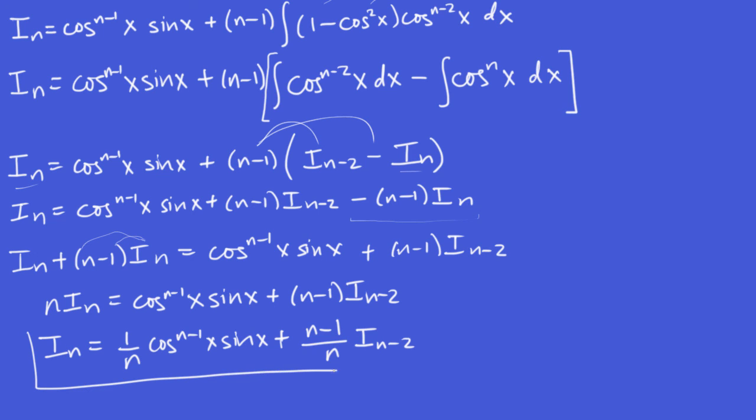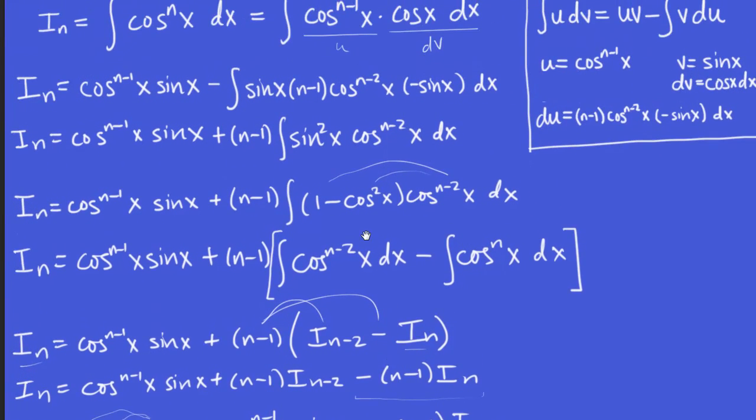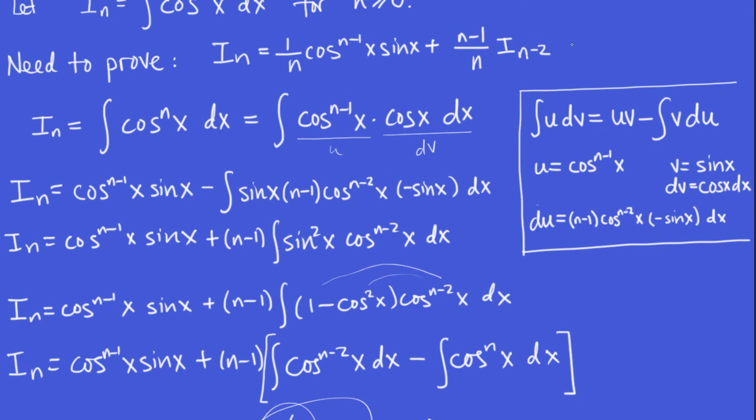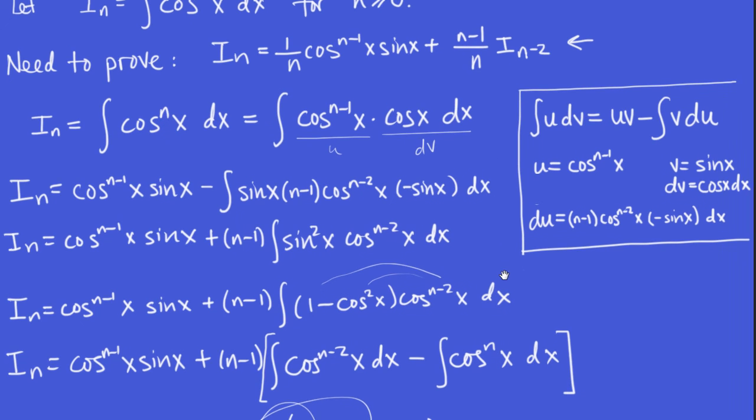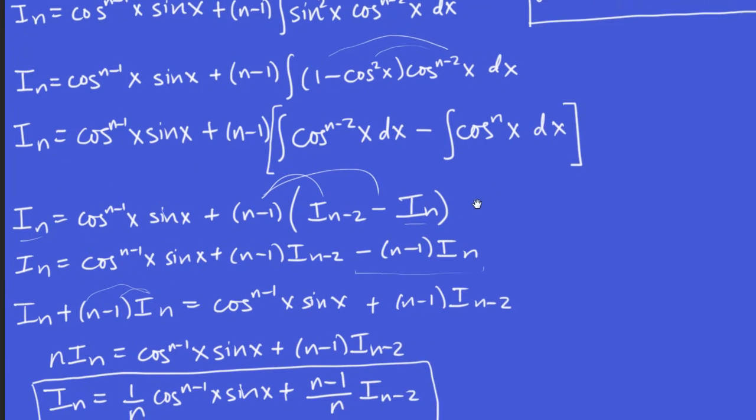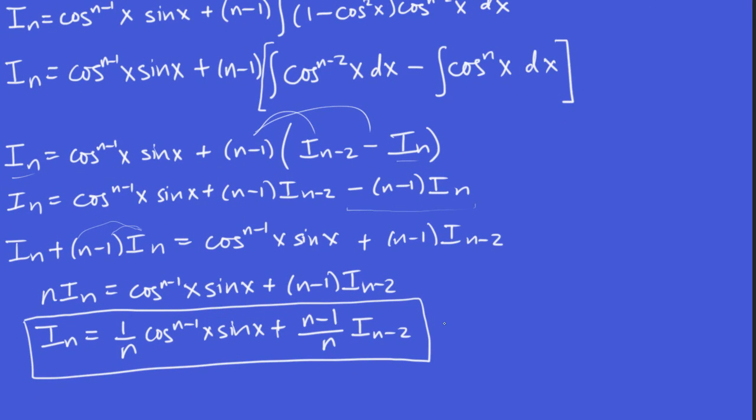And there's our formula, that's what we wanted to prove, right? If we look back up here, we said way back up here. This is what we wanted to prove: i_n is one over n cos^(n-1) x sine x plus (n-1) over n times i_(n-2). And that's exactly what we have here. So we've just proven that reduction formula for cosine. And using that, we can evaluate the integral of any power of cosine. So we'll see you next time.